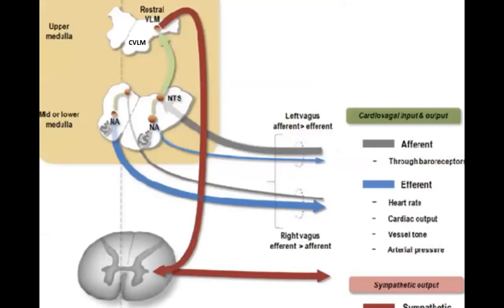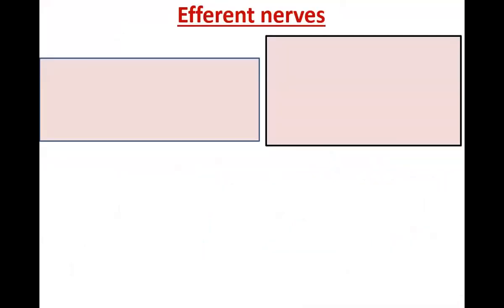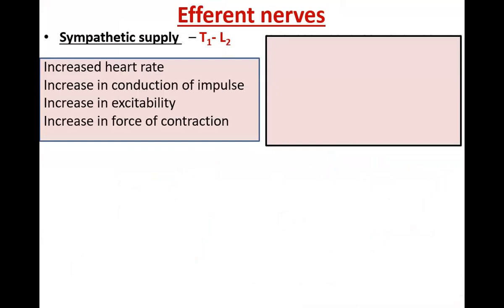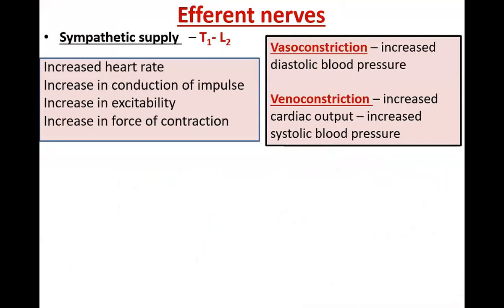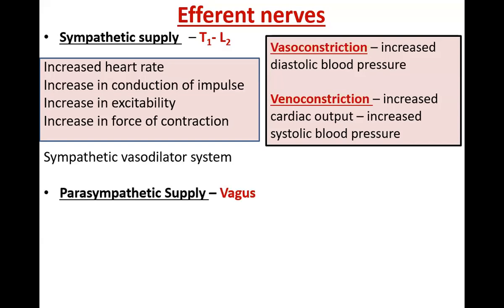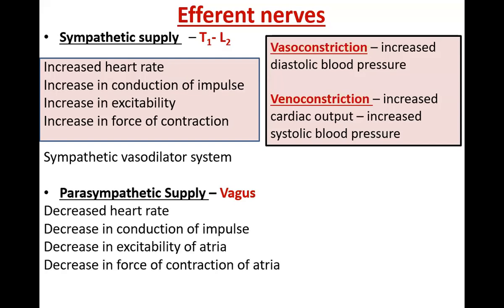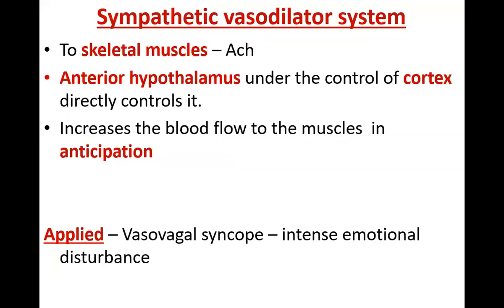The afferent nerves are the vagus nerve and glossopharyngeal nerve. The efferent sympathetic supply is by T1 to L2 (thoracolumbar in origin), causing increase in heart rate, increase in conduction of impulse, increase in excitability, increase in force of contraction of the heart, plus vasoconstriction — thus increase in blood pressure — and venoconstriction, so increase in venous return and hence increase in cardiac output. Parasympathetic nerve supply is by vagus, which is inhibitory to the heart: decreases heart rate, decreases conduction of impulse, decreases excitability and force of contraction.